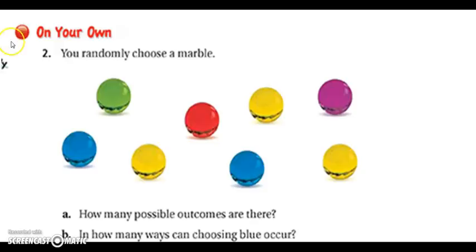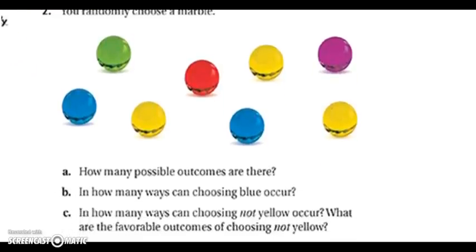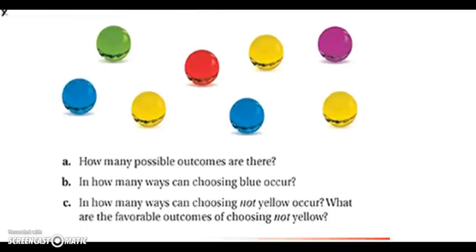Okay, I'd like you to try another problem on your own. So we're referencing the marbles on your screen. If you randomly choose a marble, A, tell me how many possible outcomes there are, B, how many ways can choosing blue occur, C, how many ways can choosing not yellow occur, and then list those favorable outcomes for choosing not yellow. When you've come up with an answer, resume play to check.